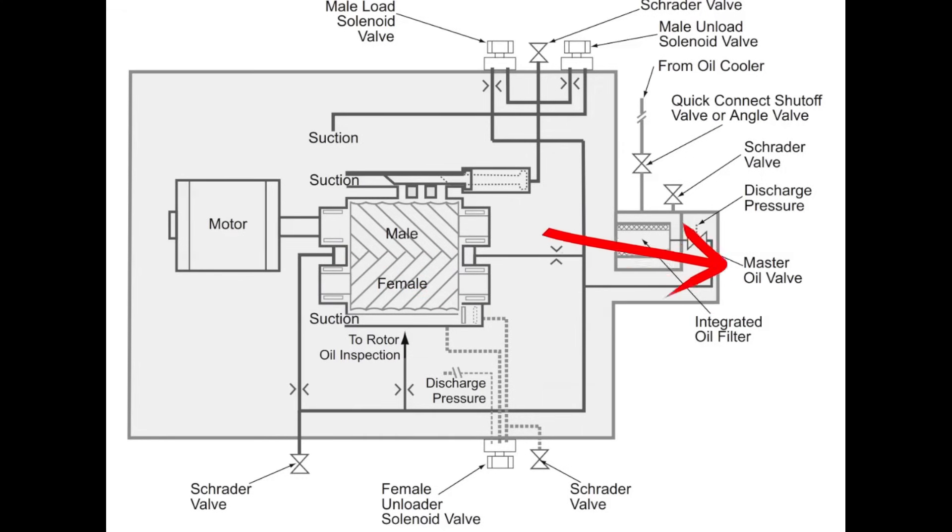All these extra lines and stuff through here is part of your oil circuit. So what the female unloader is doing is it is opening this bypass and allowing discharge gas to be rerouted back into the suction gas. What that allows us to do is have an unloaded start beyond what the slide valve can do.